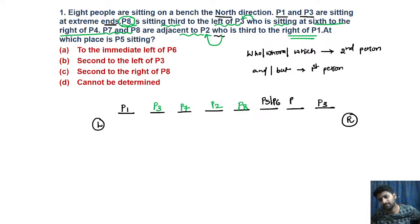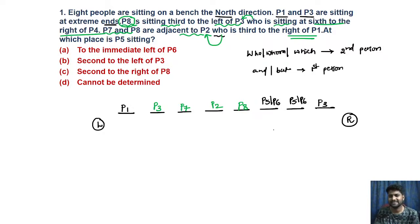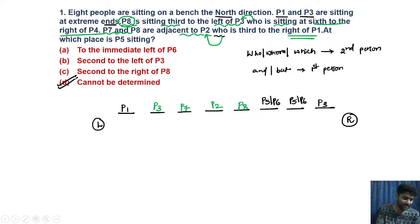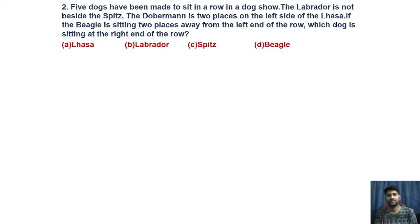There is no data related to P5 or P6 specifically, so we cannot confirm their exact positions. The question asks which place P5 is sitting. Since we are not sure with P5's position — it could be immediate left, immediate right, second to the left of P3, or second to the right — we cannot choose any of the first three options. Therefore the answer is 'cannot be determined.'